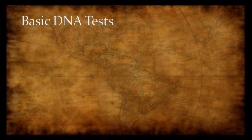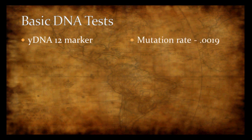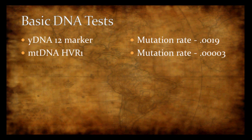There are a few basic DNA tests. The Y-DNA 12-marker test has a mutation rate of about 0.0019, while the mitochondrial DNA hypervariable region 1 has a mutation rate of about 0.00003. That means Y-DNA has about a 60 times greater probability of mutating compared to mitochondrial DNA, making mitochondrial DNA fairly stable and Y-DNA less stable.